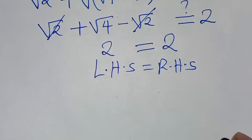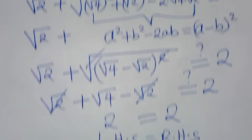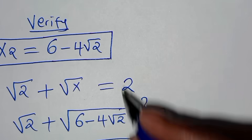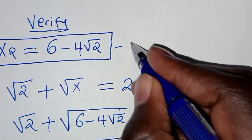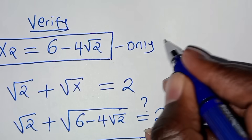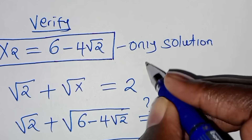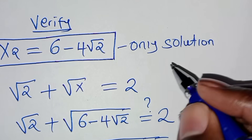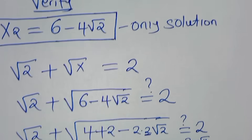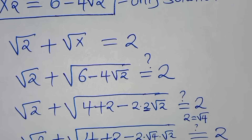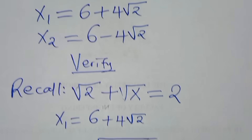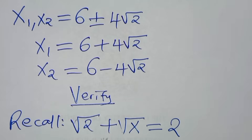So x equals 6 minus 4 square root of 2 is the only solution to this algebra problem. Please follow the steps, like this video, and subscribe.